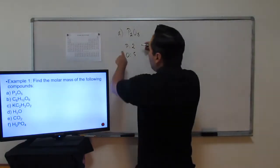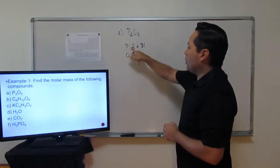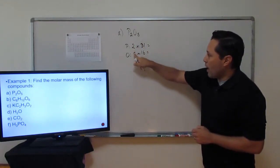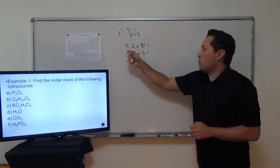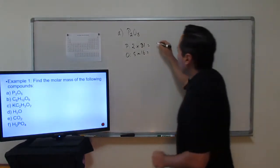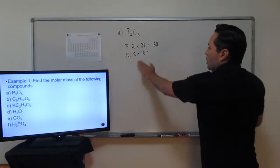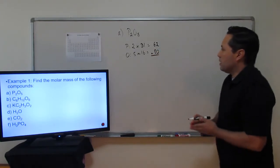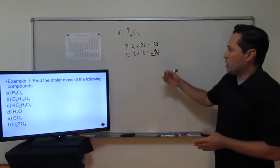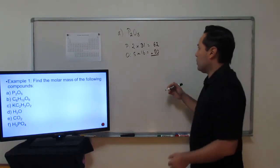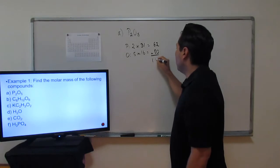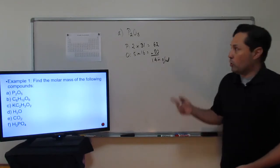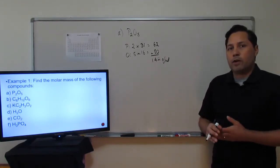For phosphorus, you have a molar mass of 31, and oxygen is 16. You multiply the number of each atom times the mass from the periodic table. For phosphorus: 2 times 31 is 62. For oxygen: 16 times 5 is 80. Then you add them together, giving you the molar mass of P₂O₅, which is 142 g/mol — grams per mole. That is the molar mass for P₂O₅, diphosphorus pentoxide.